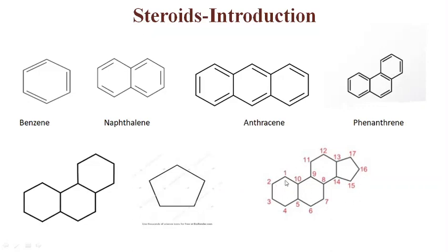The numbering — as you can see, this is a saturated nucleus. It contains three six-membered rings (saturated) and one five-membered saturated ring. The numbering starts from this end: 1, 2, 3, 4, 5. This ring is fused.